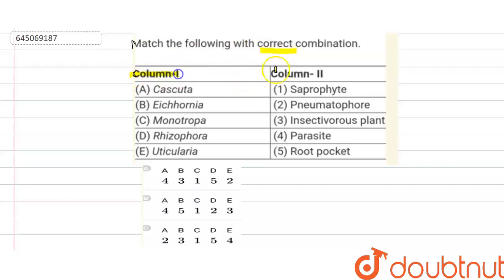Here's column one and here's column two. In first option A is Casketa. Basically Casketa is an ectoparasitic plant and it depends on host plant for their food because it lost its chlorophyll and leaves during the course of evolution. So it depends on other plant as ectoparasite. So A is correctly matched with column two, fourth row.